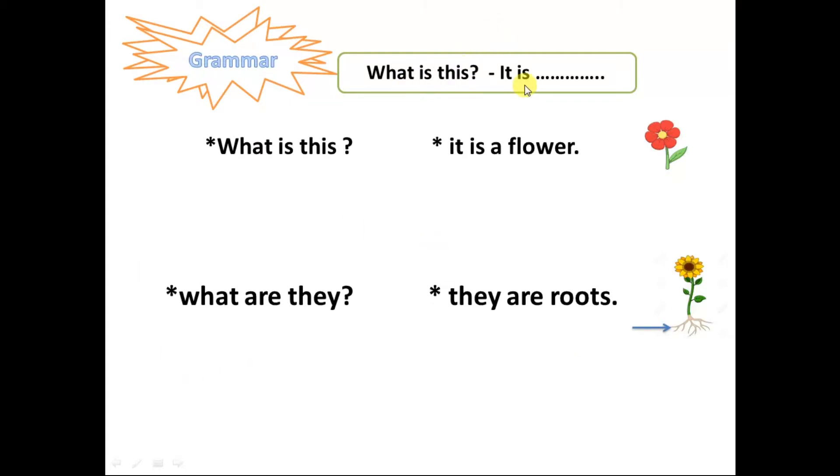What is it? It's a... When we ask about something we use what is it when the thing is singular. What is this? It's a flower. It is a flower. So we use it is with singular.